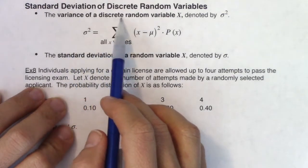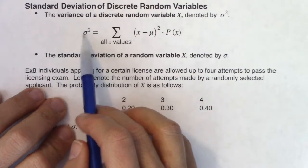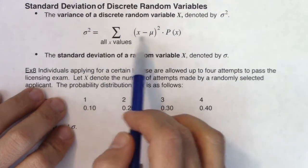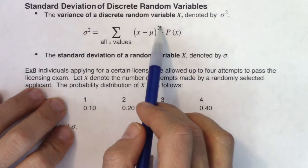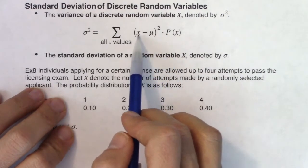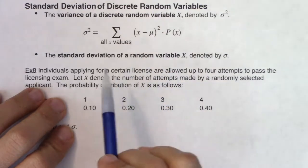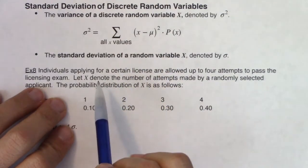So the variance of a discrete random variable is denoted by sigma squared. So here's the variance. We add all of the deviations squared multiplied by their probabilities. So here's a deviation. Your value minus your mean, square it, weight it by its probability, and we go through all of the x values.